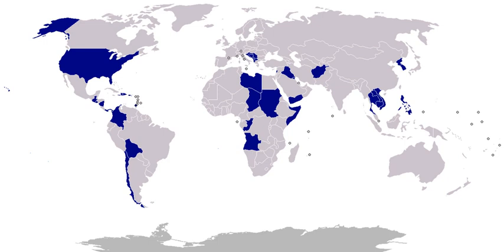1920, China, March 14: a landing force was sent ashore for a few hours to protect lives during a disturbance at Kiukiang. 1920, Guatemala, April 9–27: U.S. forces protected the American legation and other American interests, such as the cable station, during a period of fighting between Unionists and the Government of Guatemala. 1920–1922, Russia, Siberia, February 16, 1920 to November 19, 1922: a Marine Guard was sent to protect the United States radio station and property on Russian Island, Bay of Vladivostok.